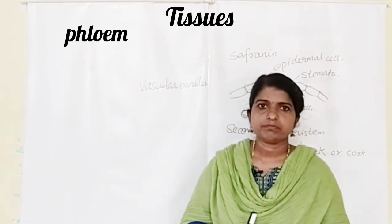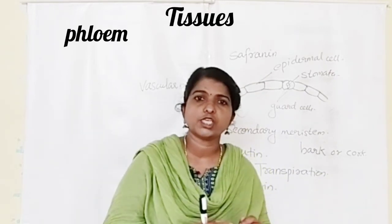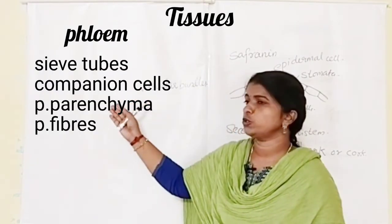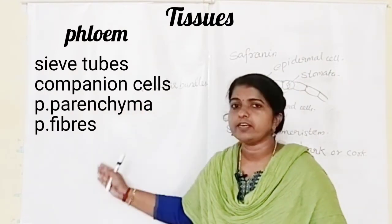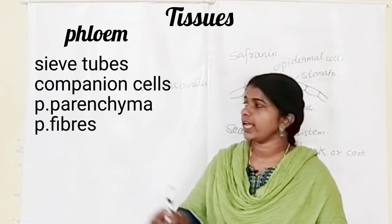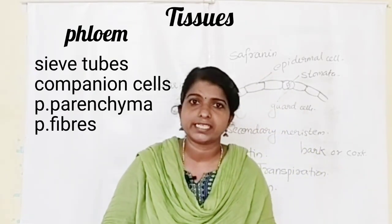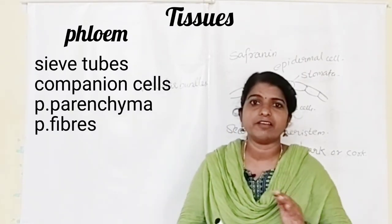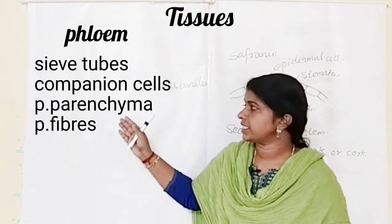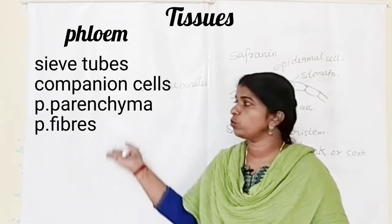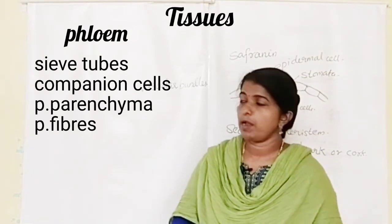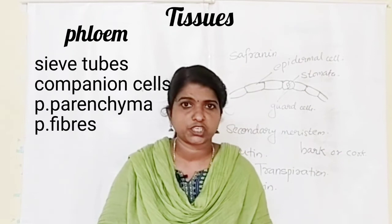The next one is phloem. Phloem is responsible for the transport of food material in plants. It also consists of different elements: sieve tubes, companion cells, phloem parenchyma, and phloem fibers. Food transport takes place through these elements. Most of the elements are living cells except phloem fibers, and they have perforated walls through which the food material is transported. One main difference is that food can be transported in both directions in phloem, but in xylem, water transport takes place only in one direction.